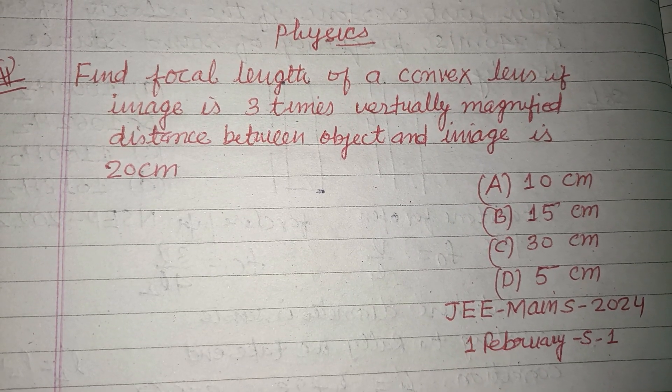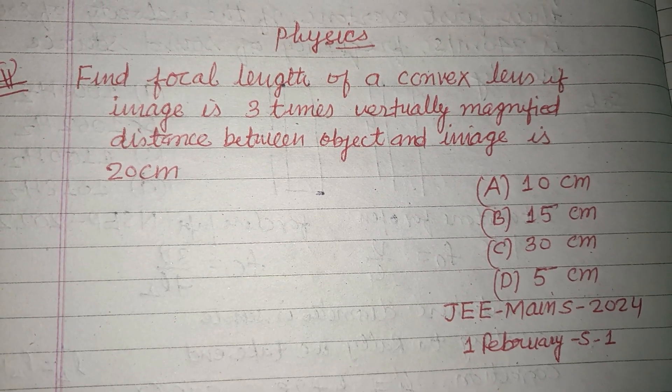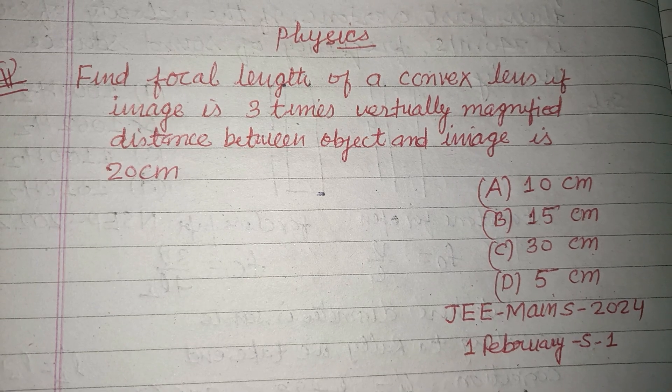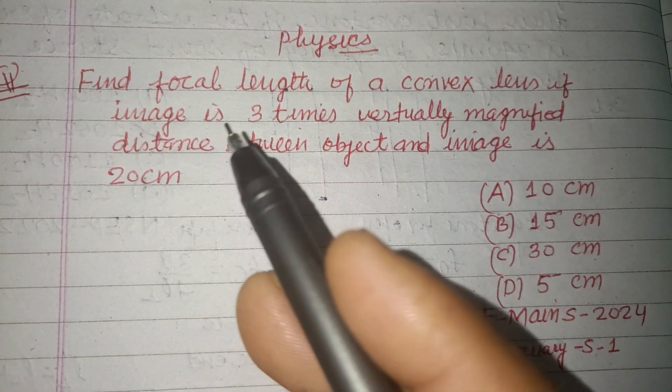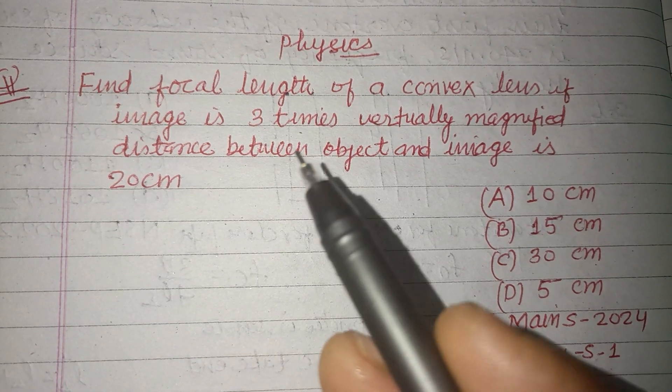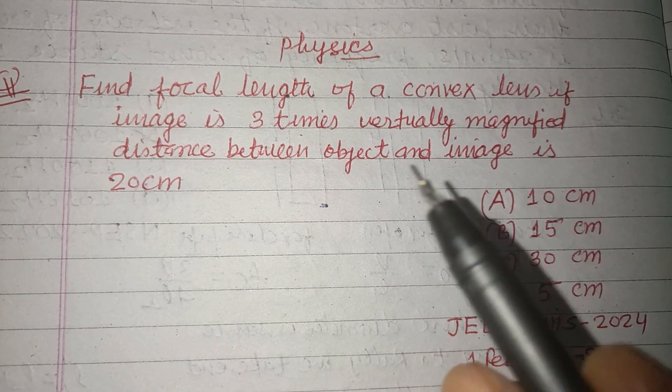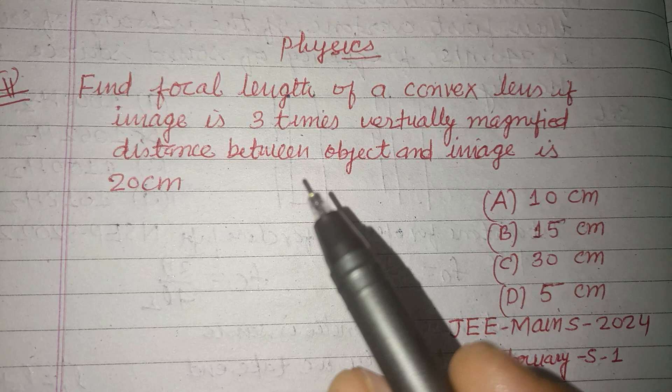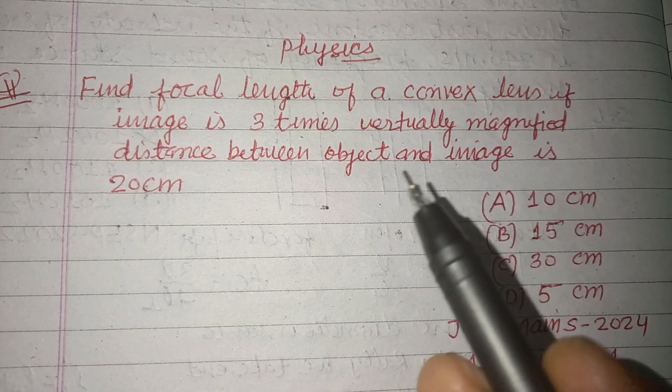Hello viewers, warm welcome to this YouTube channel. This is a question from JEE Mains 2024, First February Shift 1. Find focal length of a convex lens if the image is three times virtually magnified and the distance between object and image is 20 centimeters.